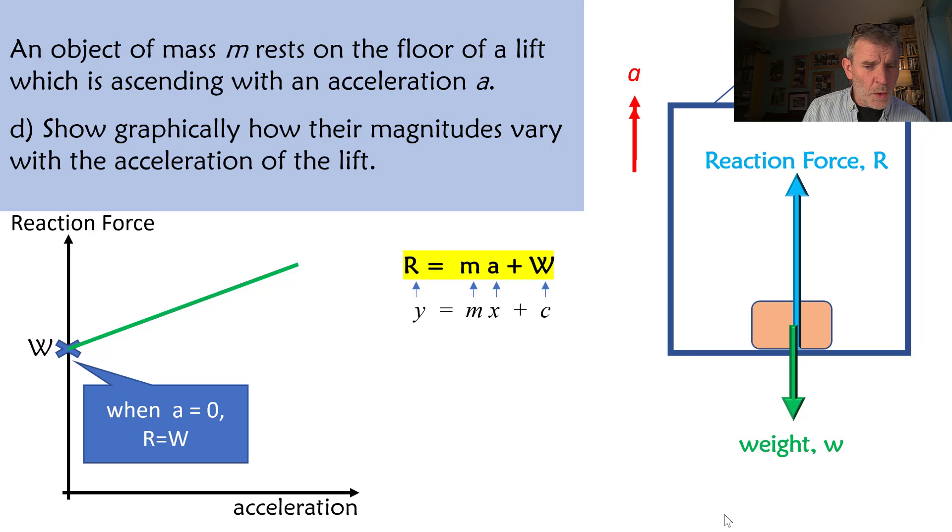So you can see on the y-axis, that's the reaction force. On the x-axis, there's our acceleration and then the y-intercept, C, that is where our weight is as you can see. And therefore, the gradient of our line is going to be the mass, m.